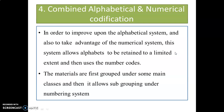Combined alphabetical and numerical codification: in order to improve upon the alphabetical system and also to take advantage of the numerical system, this system allows alphabets to be retained to a limited extent and then uses numbers to code. The materials are first grouped under main classes and then allows subgrouping under a numbering system. Every material consists of class and subclasses — classes are denoted by alphabets and subclasses are denoted by numerals.